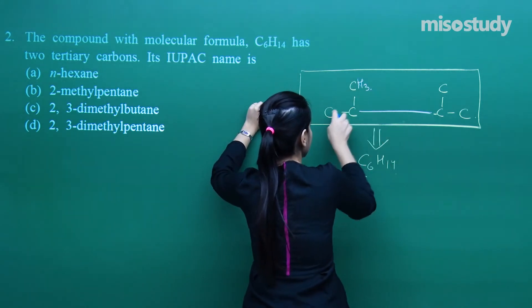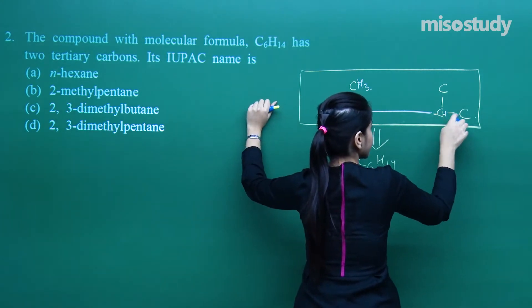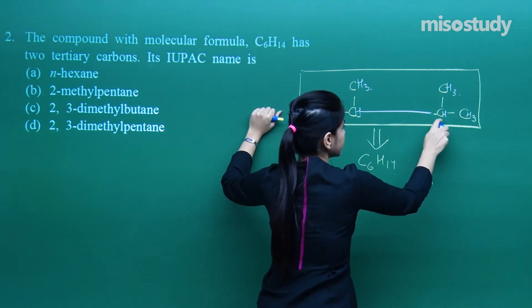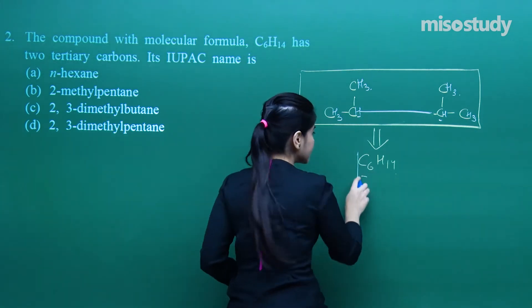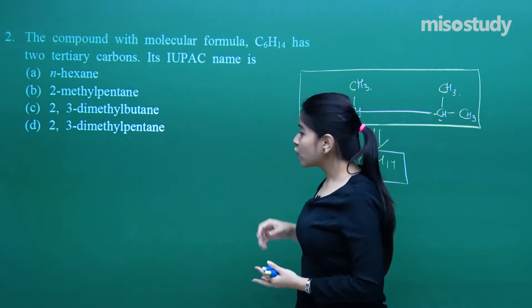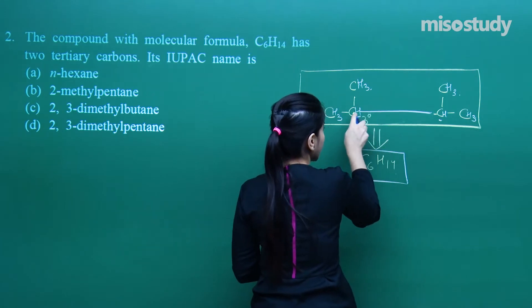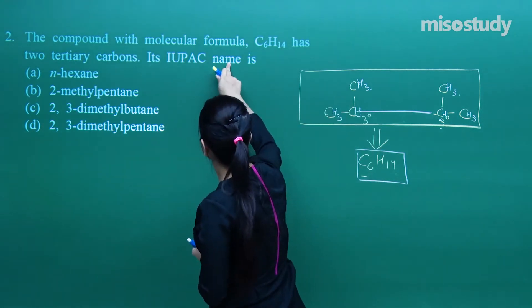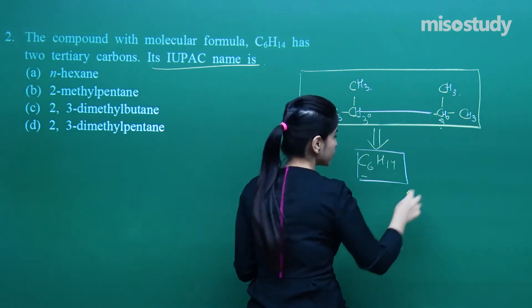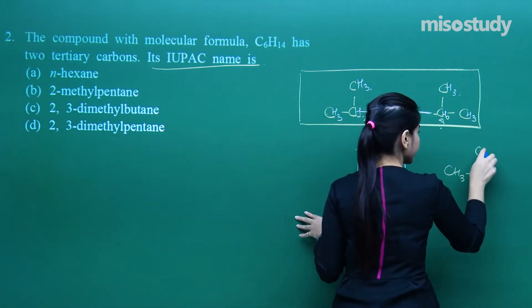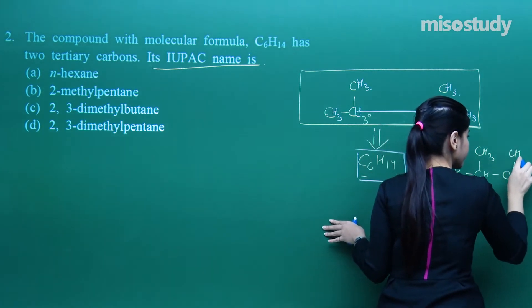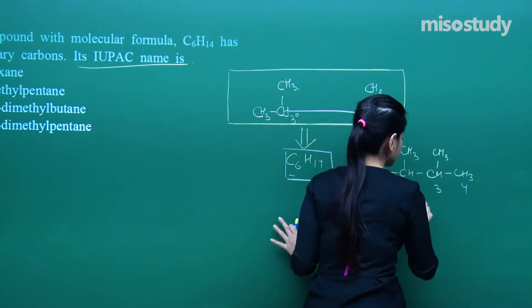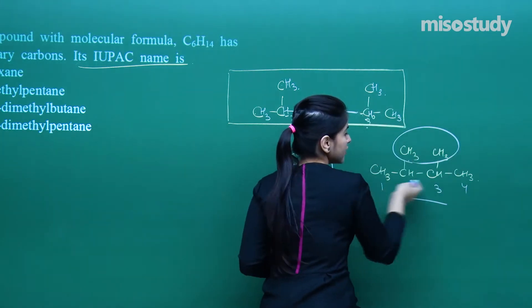Let me just count the hydrogens. I hope everybody has counted — 6, 6, 12, 13, and 14. So we have got the answer here. This is the compound that is required. If you notice, the carbons over here are only tertiary — carbon bonded to 3. Now you need to find out the IUPAC name. So the word root would be 1, 2, 3, 4 — that means 2,3-dimethylbutane is the answer.